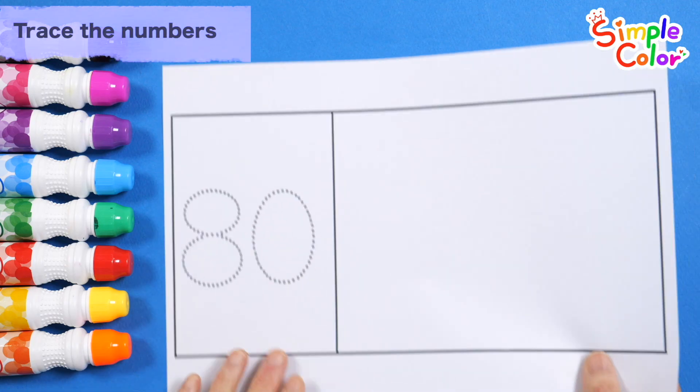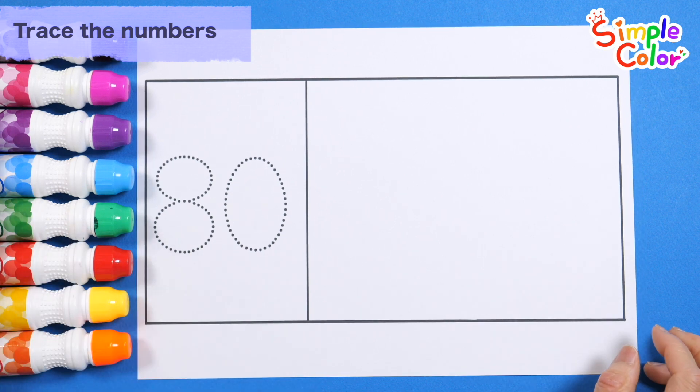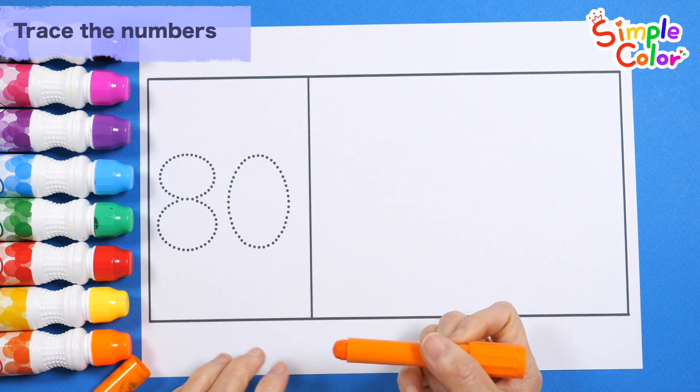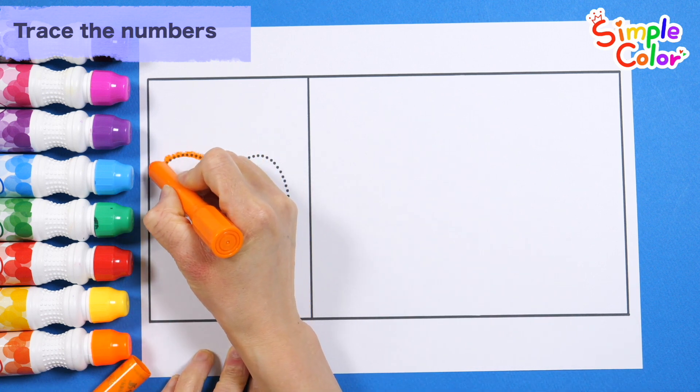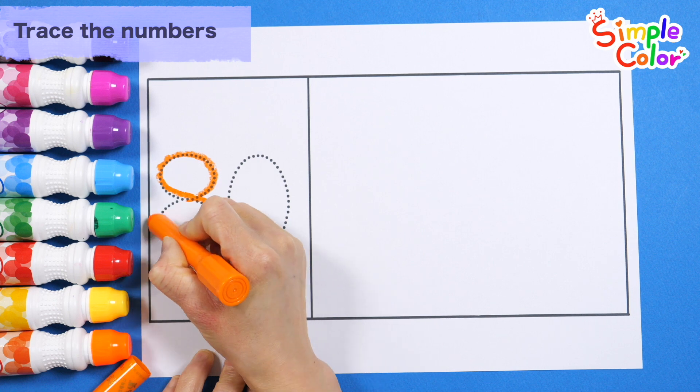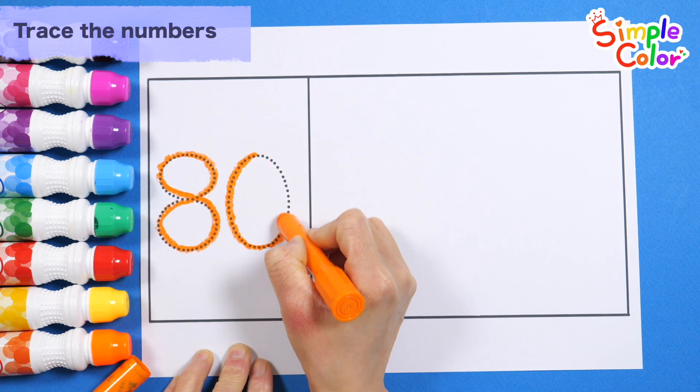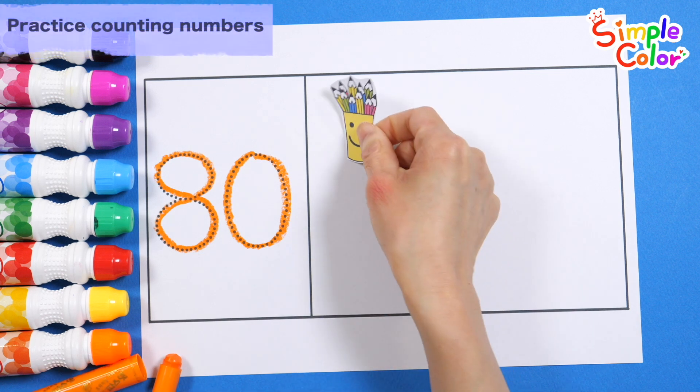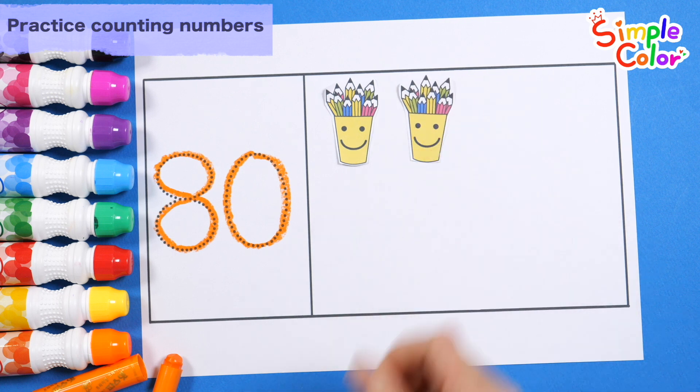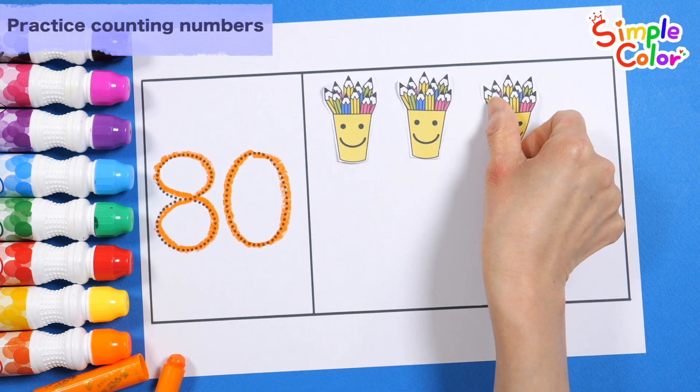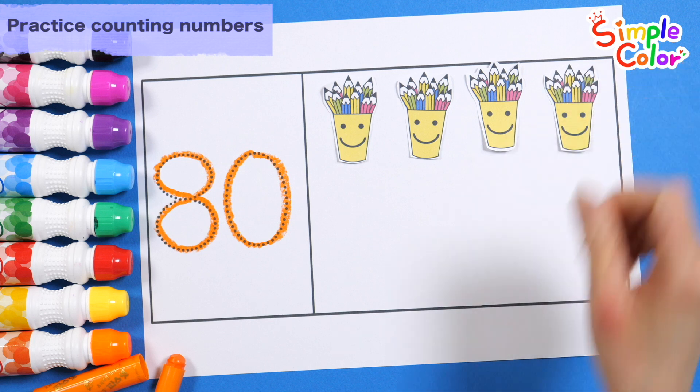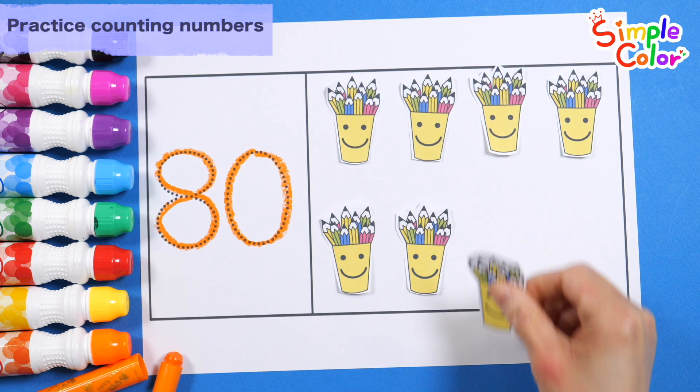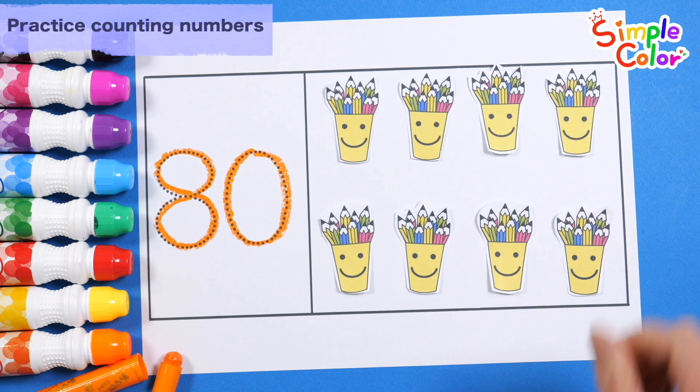Let's write 80 with an orange crayon. 80. Let's count by placing the picture on the right. 10, 20, 30, 40, 50, 60, 70, 80.